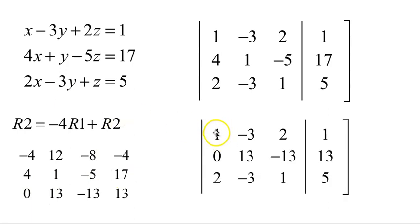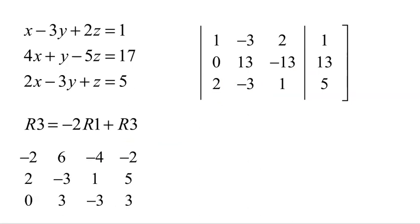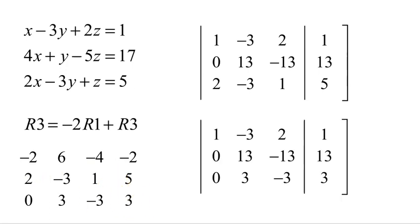I also need to use this one as the pivot to turn that 2 into a 0. Multiply the first row by negative 2 and add it to the third row. Row 3 is negative 2 times row 1 plus row 3: negative 2, positive 6, negative 4, negative 2 added to row 3 which is 2, negative 3, 1, 5. We get 0, 3, negative 3, 3. Looks unpleasant, but when it divides out, it'll be very nice. That is my new row 3.